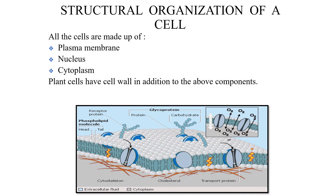Structural organization of a cell. All cells are made up of plasma membrane, nucleus, and cytoplasm — this is common in all cells, whether plant or animal. In addition, in plant cells, a cell wall is present above the plasma membrane, and chloroplast is also found.